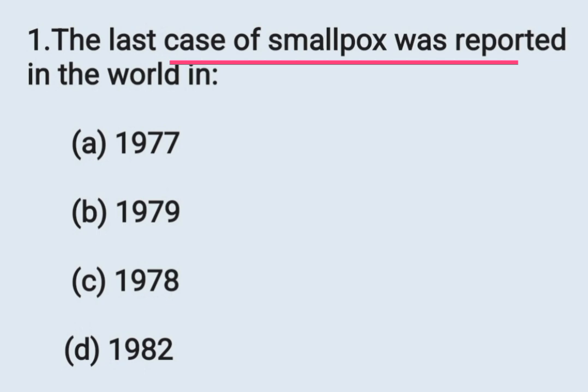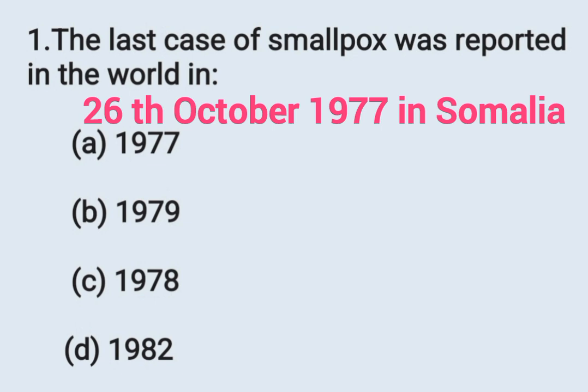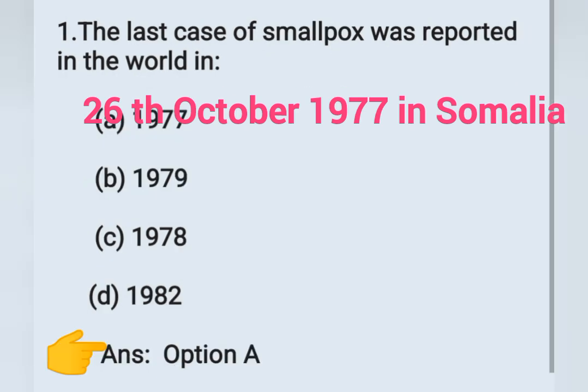First question: The last case of smallpox was reported in the world in — Option A: 1977, Option B: 1979, Option C: 1978, Option D: 1982. The last case of smallpox occurred in Somalia on 26th October 1977. So the correct answer is Option A: 1977.